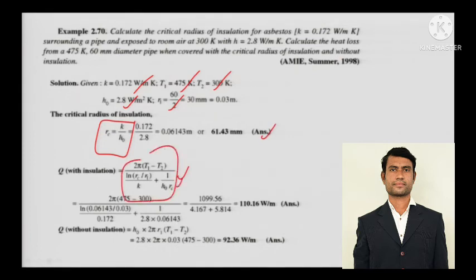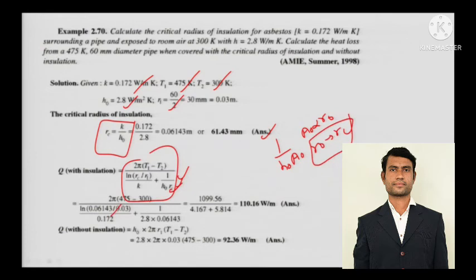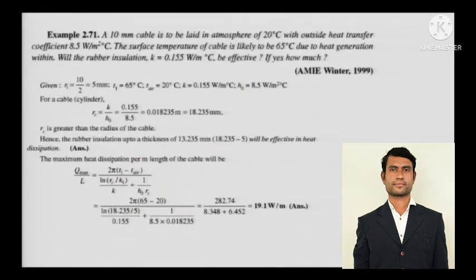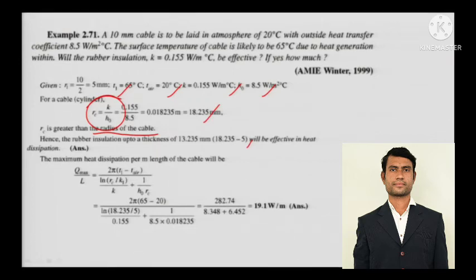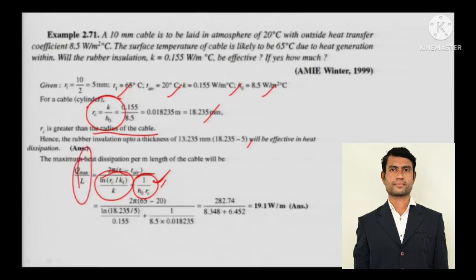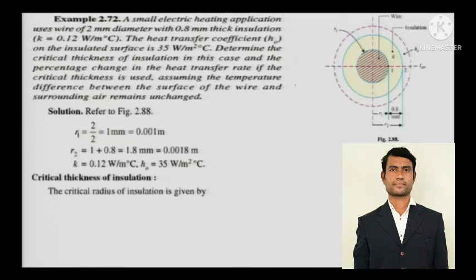For the solution with insulation, the convective resistance is 1/(h_o · A_o), where A_o is proportional to r_o, which is now rc since insulation has been added. Without insulation, it is just normal convection. The total thermal resistance is the sum of conductive resistance for the cylinder and convective resistance, and from this you calculate q_max — the maximum heat dissipation per meter length of the cable.